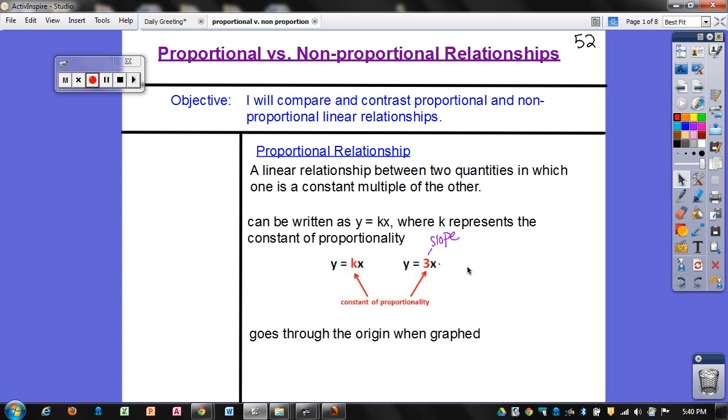You can tell that you have a proportional relationship on a graph if it goes through the origin. So when you have your x-axis or your coordinate plane here, if your line goes through the origin,